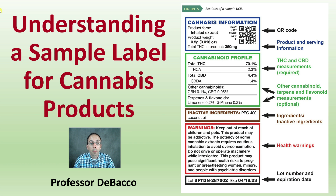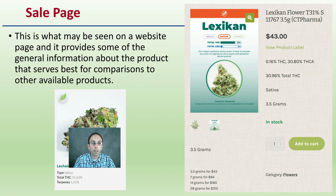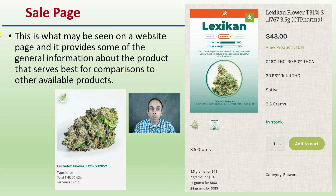Let's get into understanding a sample label for cannabis products. Now, they all may look slightly different. We're going to go over one that's more like what you would typically see on the outside packaging. First off, we're looking at a sales page — this may be what you see on a website page, providing general information about the product that serves best for comparisons to other available products.